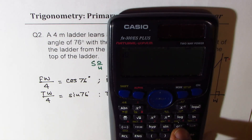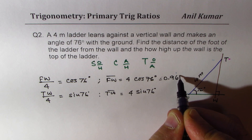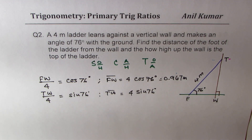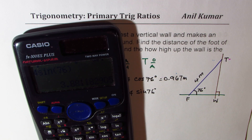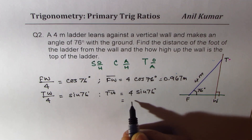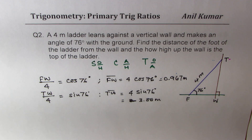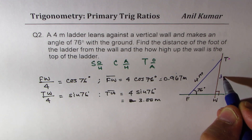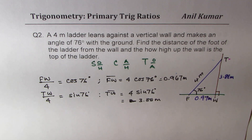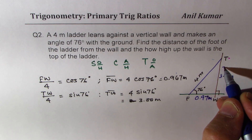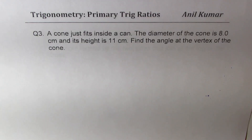Calculating: 4 × cos(76°) = 0.967 meters. And 4 × sin(76°) = 3.88 meters. So the height up the wall is 3.88 meters, which we can round to 3.9 meters, and the foot of the ladder is approximately 0.97 meters from the wall. That is how we solve this. Now let's move on to question number three.